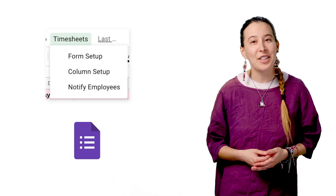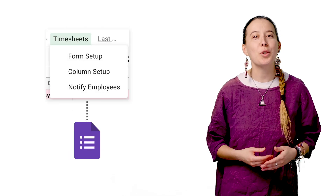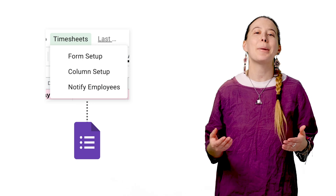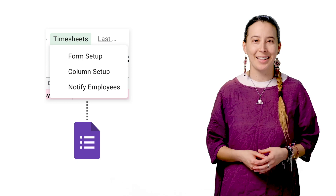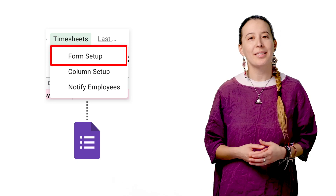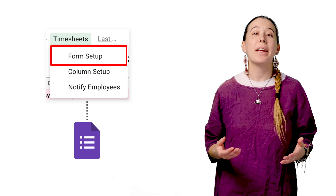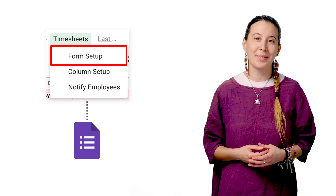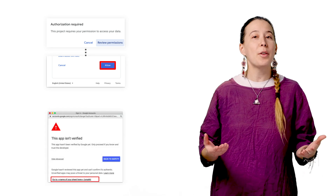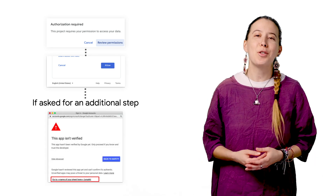Next, inside the sheet, you will see a custom menu called Timesheets. Click it and select Form Setup. This will create a form. A dialog box will appear asking you to authorize a script. Follow the steps and choose Allow.